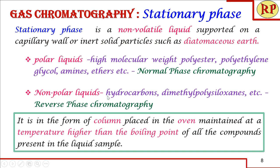When the stationary phase is a non-polar liquid like hydrocarbons or dimethyl polysiloxanes, the non-polar or less polar components have more affinity towards the stationary phase and come out later, while the more polar components come out first because they have less affinity towards the stationary phase. This is called reverse phase chromatography.